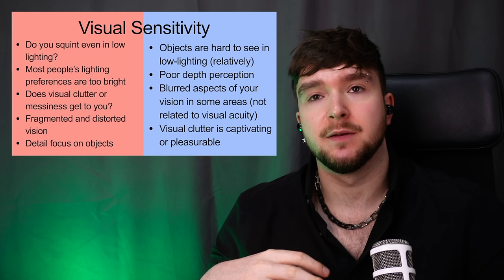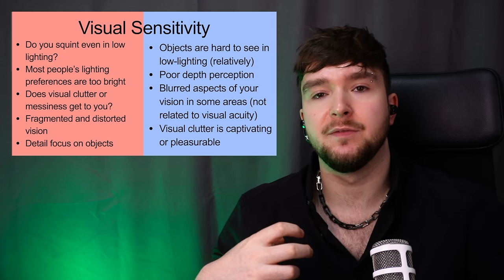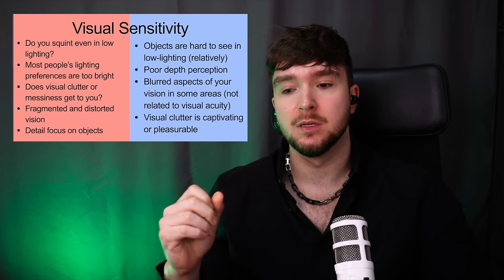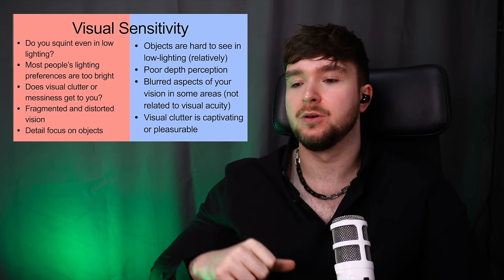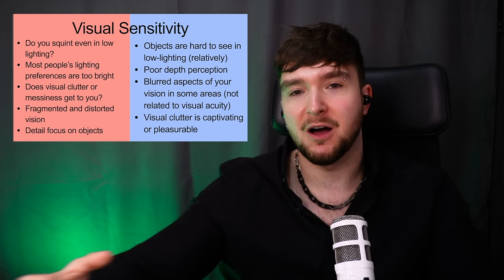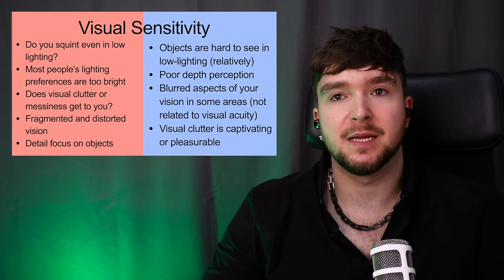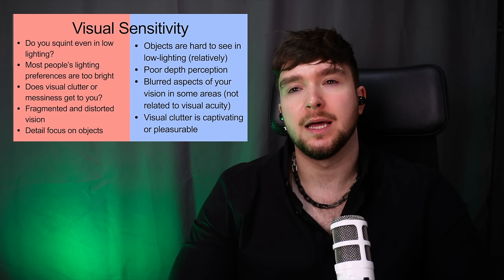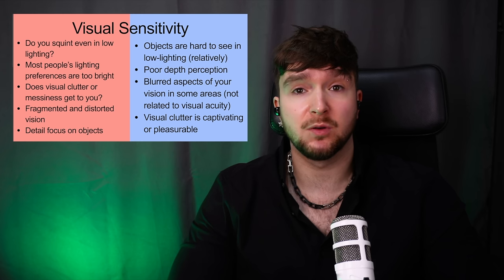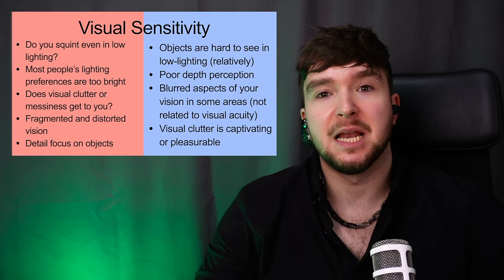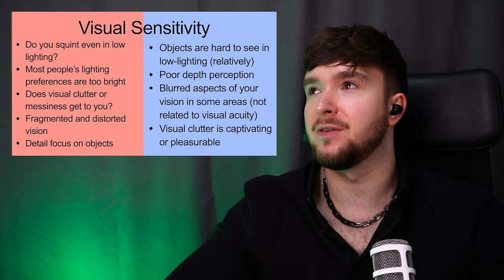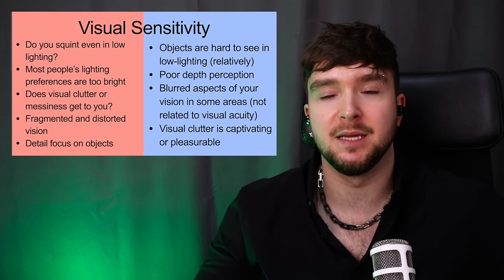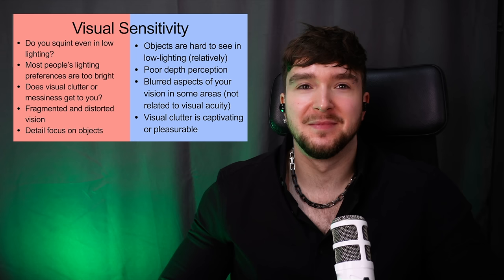On the hyposensitive side, objects could be hard to see even in low lighting, relative to other people. You could have quite poor depth perception — it's hard to understand how far things are away from you. You could have some blurred aspects of your vision not related to visual acuity. And visual clutter could be captivating or even pleasurable — you might have lots of art on your walls and various objects dotted all over the place, and find the idea of minimalism almost vomit-inducing.